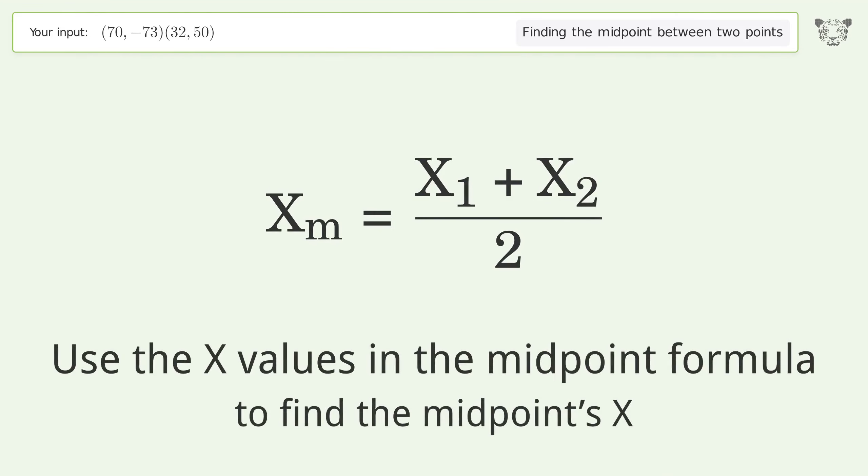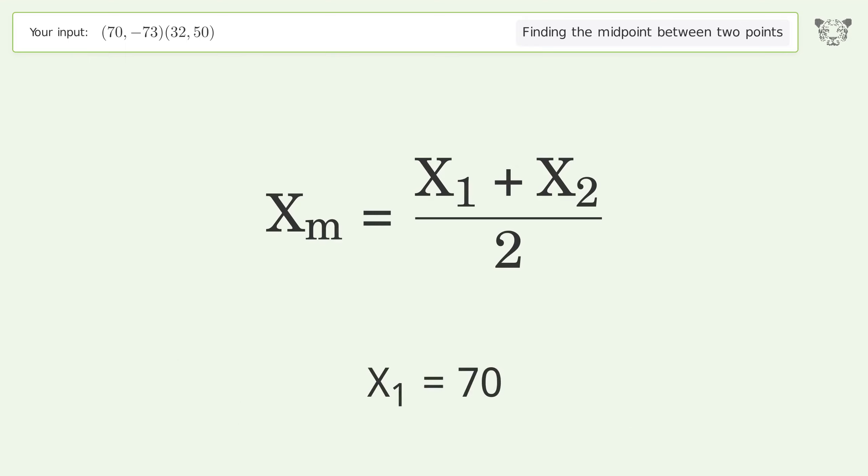Use the x values in the midpoint formula to find the midpoint's x. x1 equals 70, x2 equals 32.